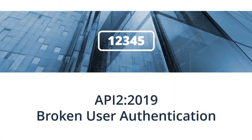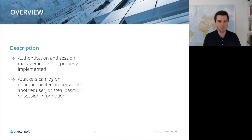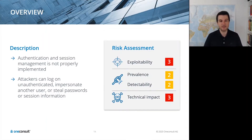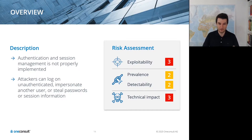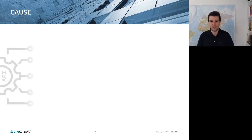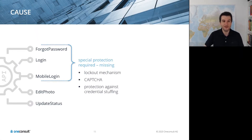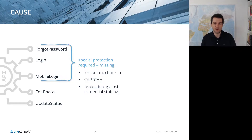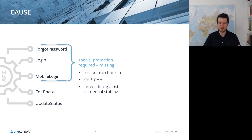The second item is broken user authentication. This arises when authentication and session management are not properly implemented, allowing an attacker to log on unauthenticated, impersonate other users, or steal passwords or session information. There are a large number of API endpoints, including distinct endpoints for authentication such as password reset, login, or mobile login, that require special protection like brute force prevention. If these mechanisms are missing, vulnerabilities arise.